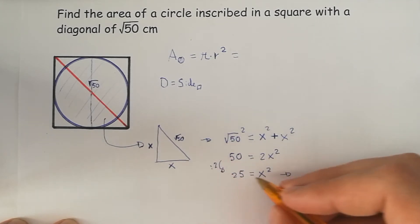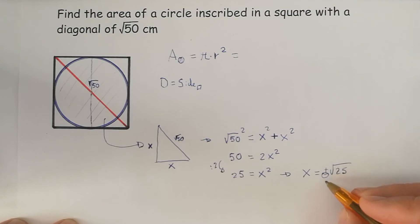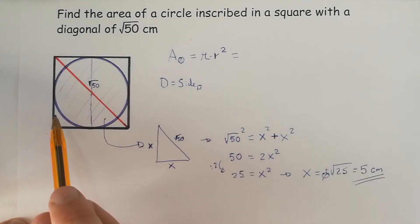So if we do the square root, we get x plus or minus the square root of 25. The negative solution has no meaning for us here in this problem. So 5 is the right length for the side of the square.